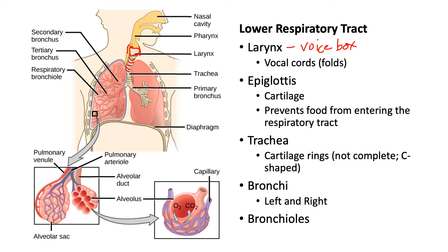Air travels in through the mouth or nasal cavity, through the pharynx, down the larynx. At this point, the trachea will branch off into two main bronchi. We have a left and a right bronchus — bronchus is singular, bronchi is plural. I want to point out that you identify left and right based on the person you're viewing. So this would be the right main bronchus and this would be the left main bronchus.